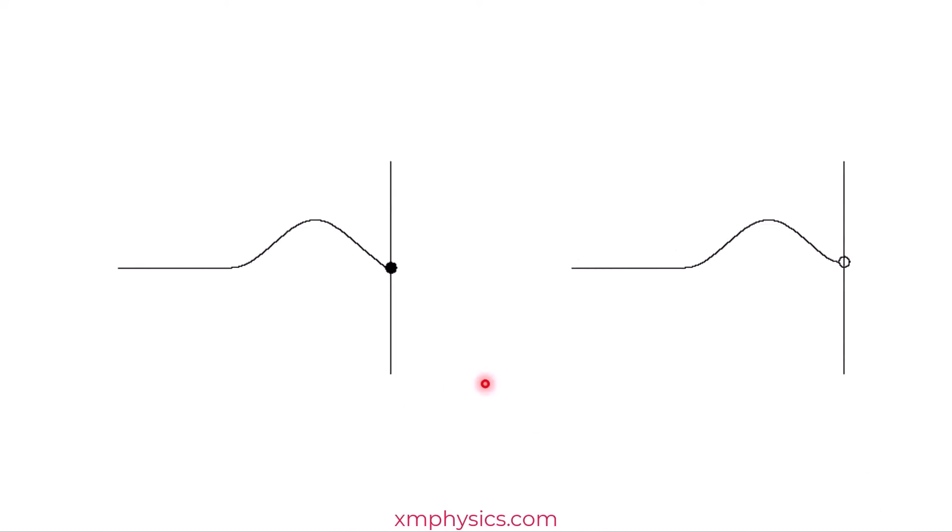So there are actually two types of reflections. When a wave encounters a fixed end, it reflects with a phase change of 180 degrees. Like this one here. You see a positive pulse reflects and becomes a negative pulse. It flips around. When it flips around, we say that there's a phase change of 180 degrees.